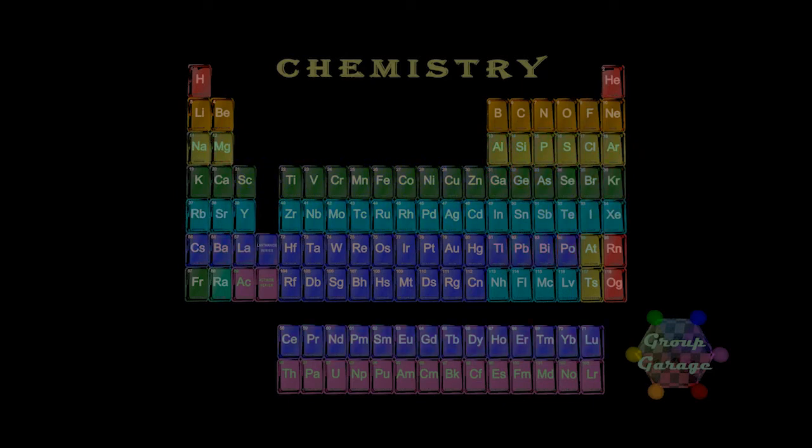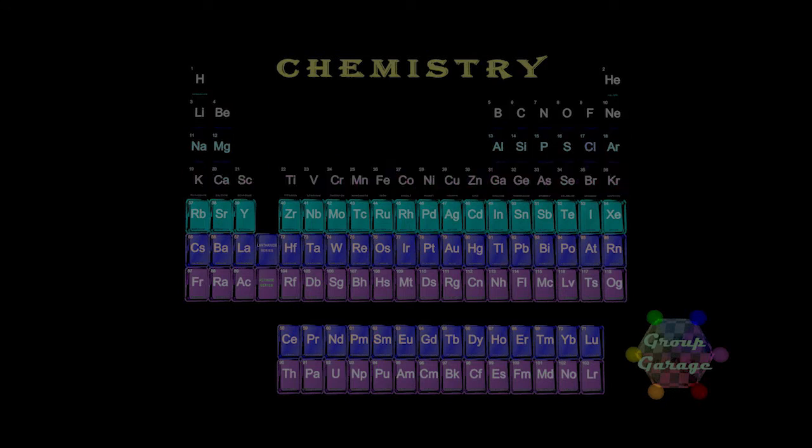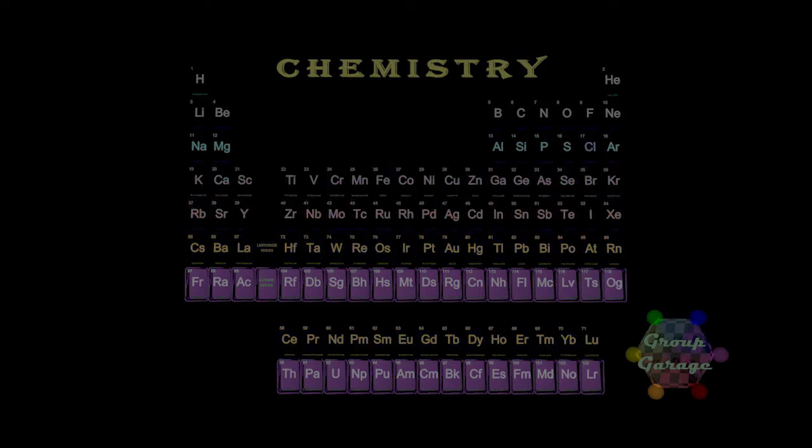This time, rather than focus on the groups or families of the elements, such as the alkali or transition metals, let's look at the elements all in one row. This is called a period, and we can see that there are seven horizontal rows or seven periods.